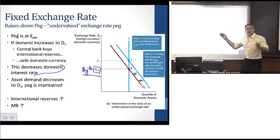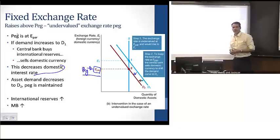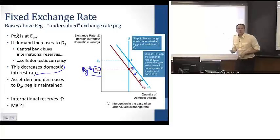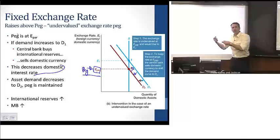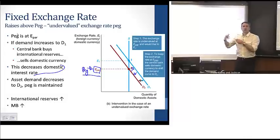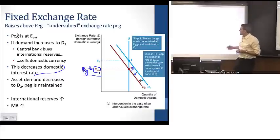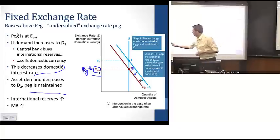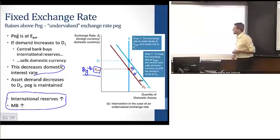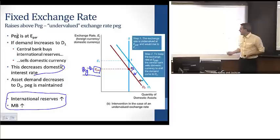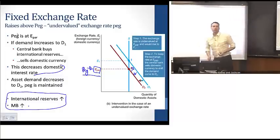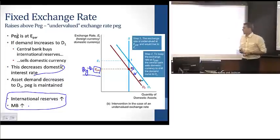As long as nothing else changes, we sit at the peg and everything is fine. But if there's persistent upward pressure on demand away from the peg, the central bank must constantly intervene. In this case, its holdings of international reserves increase, and it has to introduce more currency in circulation — raising the monetary base — in order to maintain the peg.